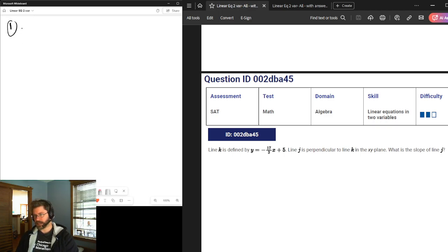Let's go ahead and dive in on question number one here. Ending code is A45. So let's dive right in. We've got line k in slope-intercept form. It's perpendicular to line j. What is the slope?